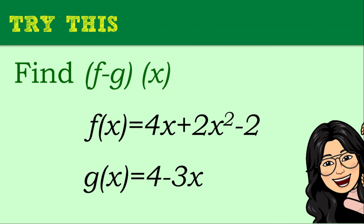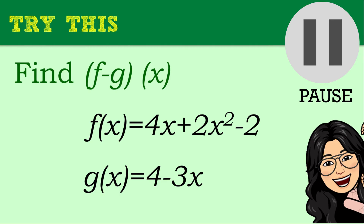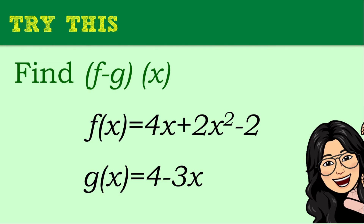Now let's try this. Given f of x equals 4x plus 2x squared minus 2 and g of x equals 4 minus 3x, find f minus g of x. You may pause this video and take your time in answering. Let's continue — I will show the solutions so you can compare with your answer.